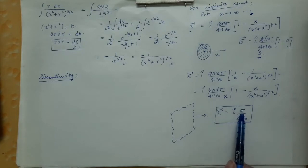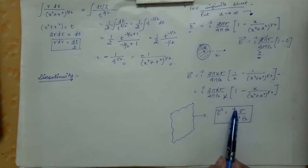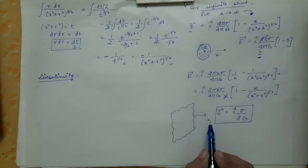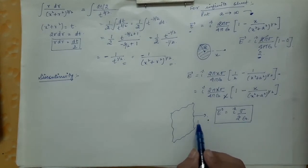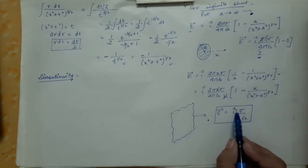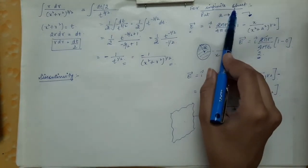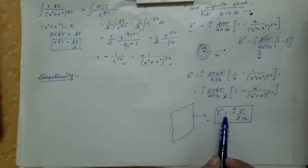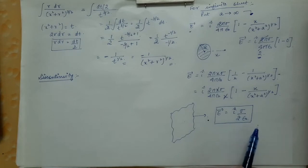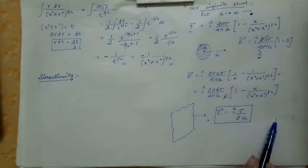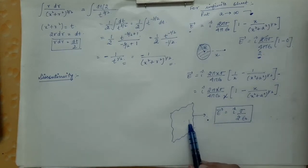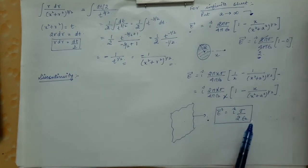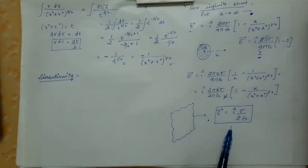Here you can clearly see that the formula for an infinite sheet — E = î sigma / 2ε₀ — contains sigma and 2ε₀ but no x term. X was the distance of the observation point from the disk. The absence of x means that for an infinite uniformly charged sheet, the electric field strength is independent of the coordinates of the observation point.